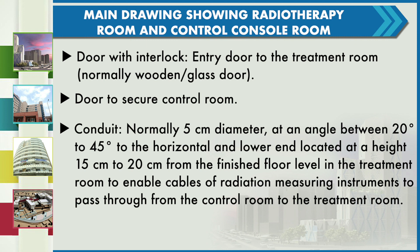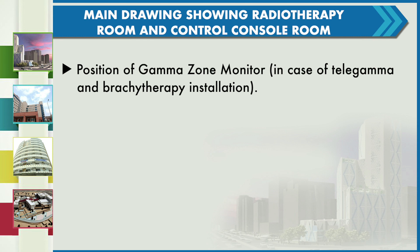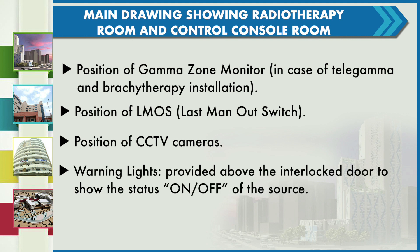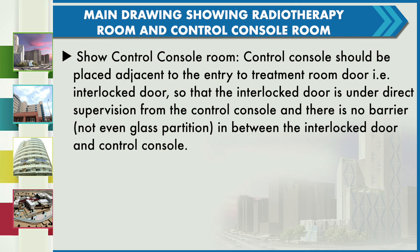Door to secure the control room; conduits normally of 5 cm diameter at an angle of 20 to 45 degrees to the horizontal, with the lower end located at a height of 15 to 20 cm from the finished floor level in the treatment room, to enable cables of radiation measuring instruments to pass through from the console room to the treatment room; position of gamma zone monitor for telegamma and brachytherapy installations; position of the last man out (LMO) switch; position of CCTV cameras; and warning lights above the interlock door to show the on/off status of the source. The control console should be placed adjacent to the entry interlock door so that the interlock door is under direct supervision from the control console with no barrier — not even a glass partition — between the interlock door and control console.